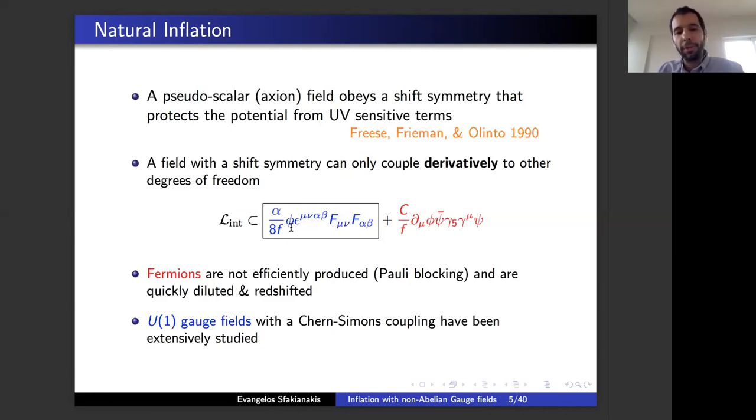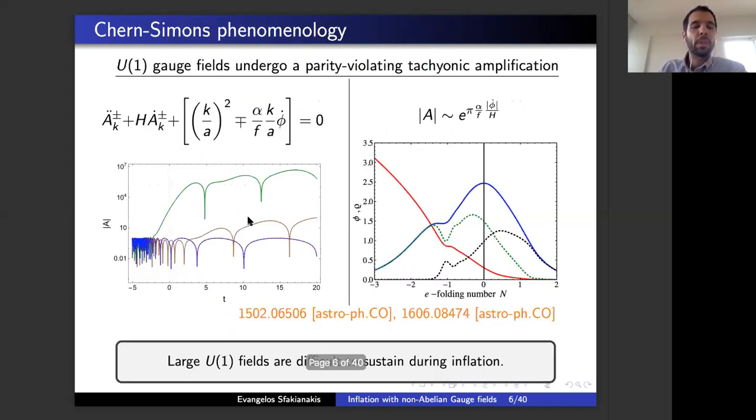Each of the two terms has very different phenomenologies. Fermions cannot be efficiently produced because of Pauli blocking, and during inflation they're diluted and redshifted. Although we have shown that they can have interesting phenomenology because of a helicity asymmetry that can be transferred to a lepton asymmetry, so you can actually have leptogenesis from this coupling. And then U(1) gauge fields with this coupling have been very extensively studied.